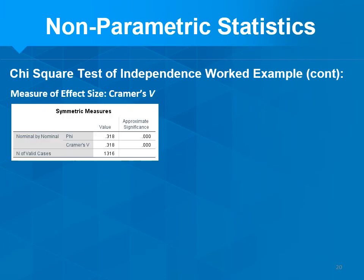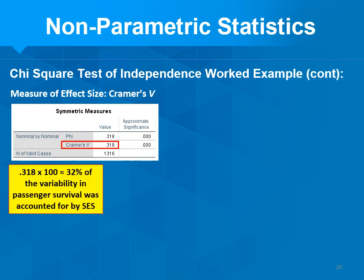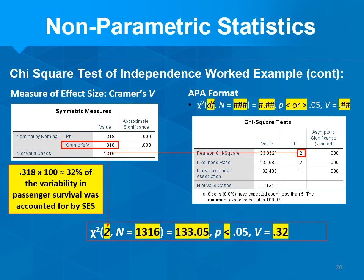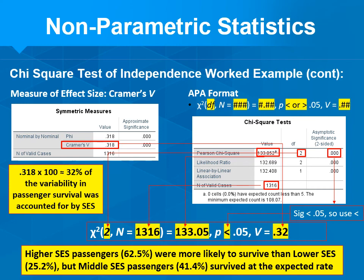Our measure of effect size is Cramer's V — 0.318, or about 0.32 — meaning about 32% of variability in Titanic survival could be predicted by passenger class. APA format: two degrees of freedom, N of 1,316 passengers, chi-square rounded to two decimals, p less than 0.05, and V from the symmetric measures table. The take-home for grandma: higher SES passengers — 62.5% — were more likely to survive than lower SES passengers at 25.42%. Middle SES passengers at 41.4% survived at the expected rate.